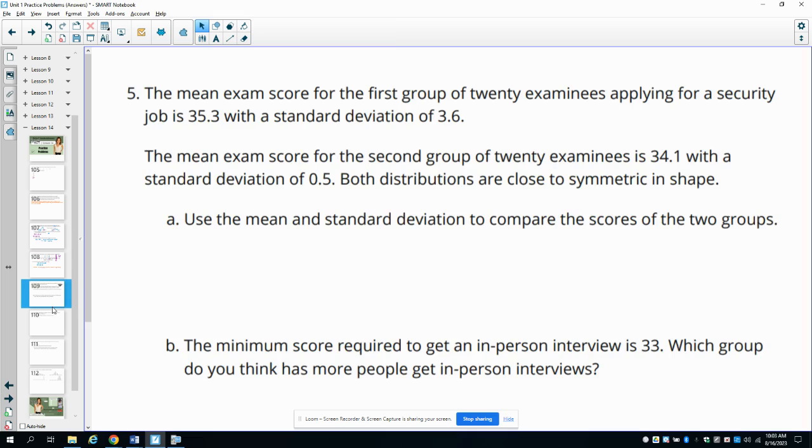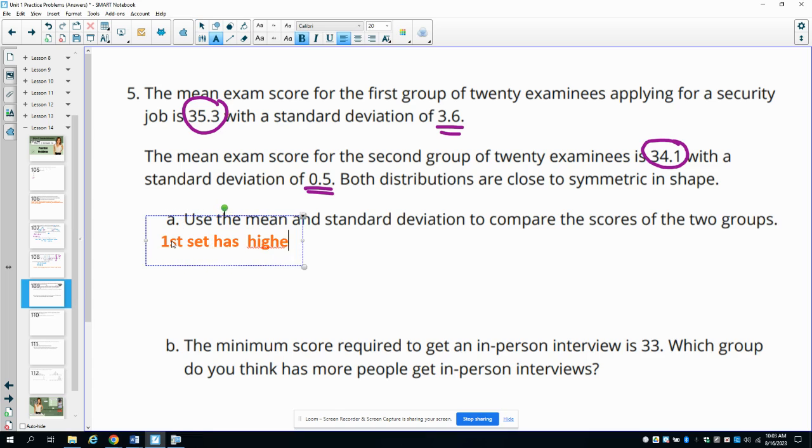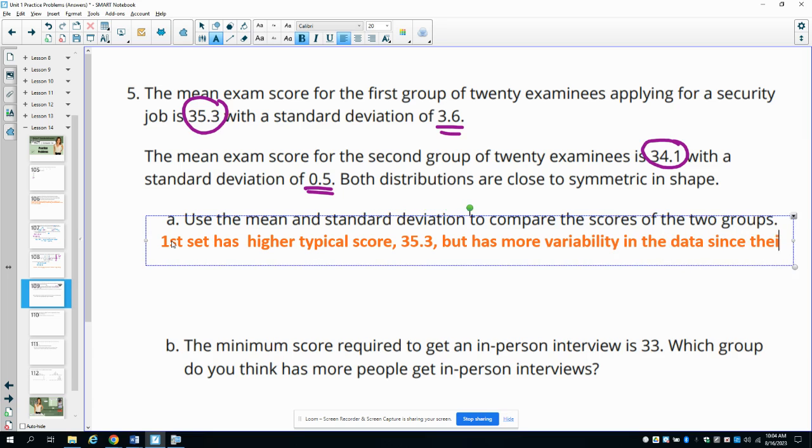Number five: The mean exam score for the first group of 20 examinees applying for a security job is 35.3 with a standard deviation of 3.6. The mean score for the second group of 20 examinees is 34.1 with a standard deviation of 0.5. Both distributions are close to symmetric in shape. Use the mean and standard deviation to compare the scores. The first set has a higher typical score at 35.3 but has more variability in the data since their standard deviation is 3.6, larger than that 0.5.